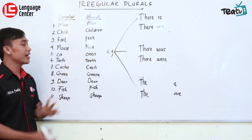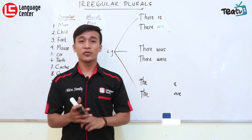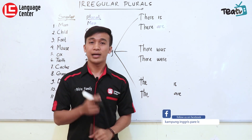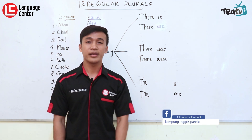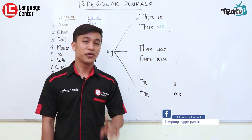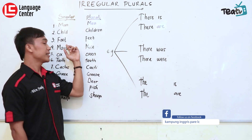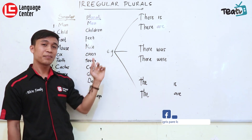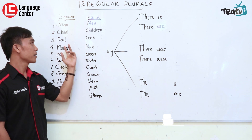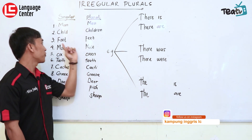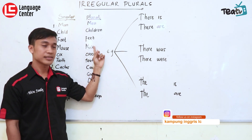Yang ketiga adalah 'foot'. Foot itu tunggal — hanya kaki yang satu. Kalau dua-duanya, dibaca jadi 'feet', bukan 'foots'. Jadi tidak ada perubahan penambahan S, ES di sini. Makanya itu disebut irregular — foot menjadi 'feet'.